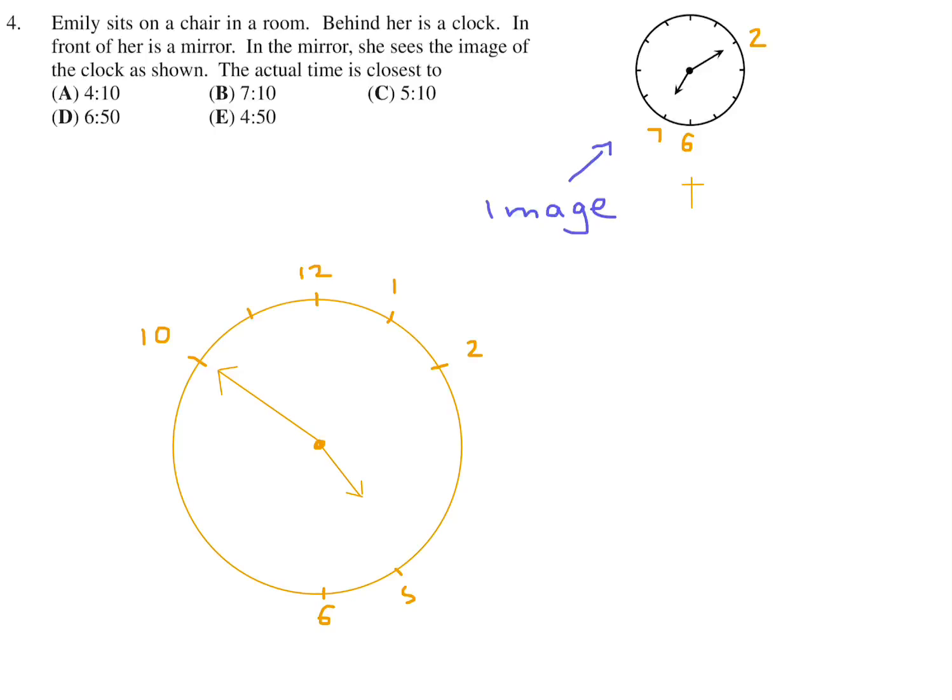That's basically the reflection in a mirror. So what time is it? That's what they're asking for, the actual time. And this looks like it would be 4 and then it's pointing at the 10, so that's 50. So that would be choice E.